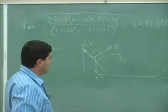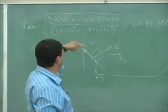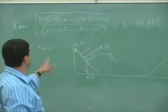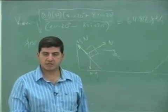Now we could put in the numbers for our situation: 32, sine 20 minus 0.8 cosine 20. Let's see what we get.